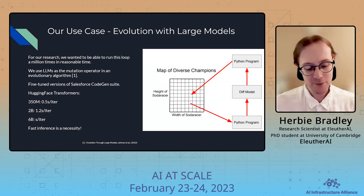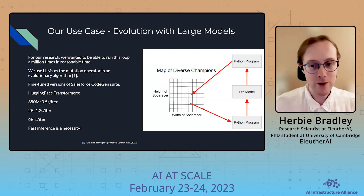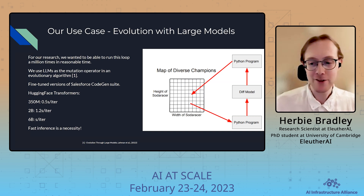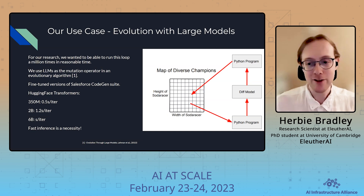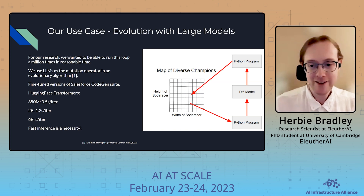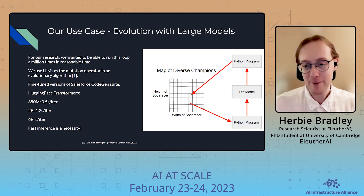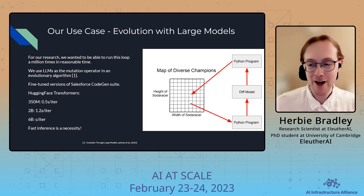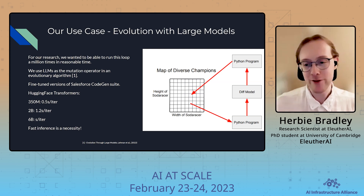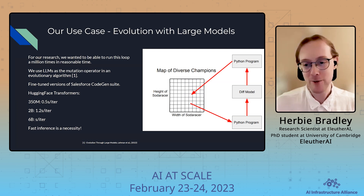This is basically a use case at Carper. We're working on an algorithm called Evolution with Large Models, which is a synthesis of evolutionary algorithms and large language models, in which the language model is used as the mutation operator in the evolutionary algorithm. We have this loop with a quality diversity algorithm called MAP-Elites. We take a Python program from the map, pass it into our language model to mutate the program, and then place the hopefully valid program generated by the language model back into the map, depending on its performance and fitness.